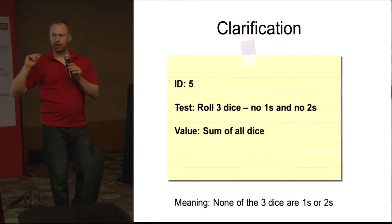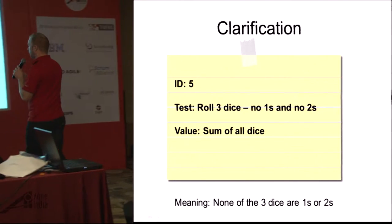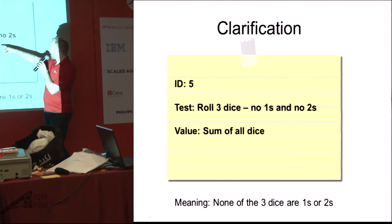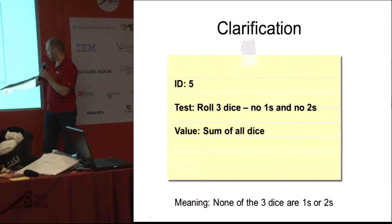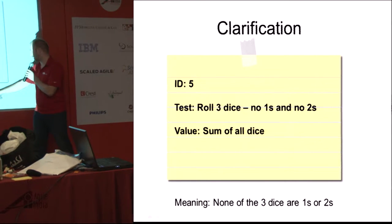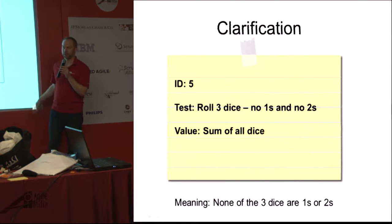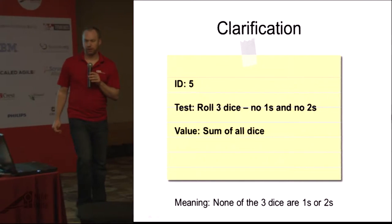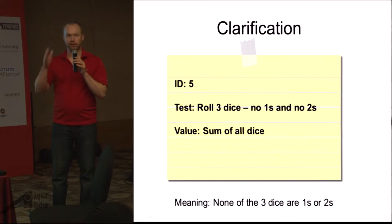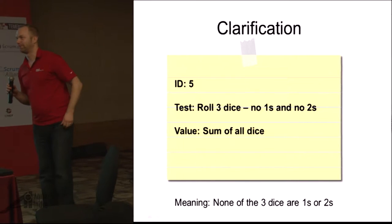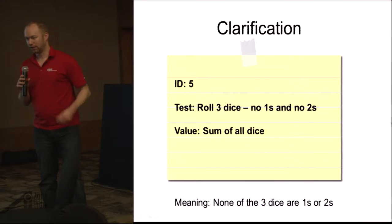One clarification: if you see cards that say 'no ones and no twos,' that means none of the three dice show a one and none show a two. There are others like 'no fives and no sixes' or 'no ones, no twos, and no threes' — it's the same idea. It doesn't mean number one; it means there are none. We've tested this a few times and it's been a common confusion, so volunteers are here to help clarify.